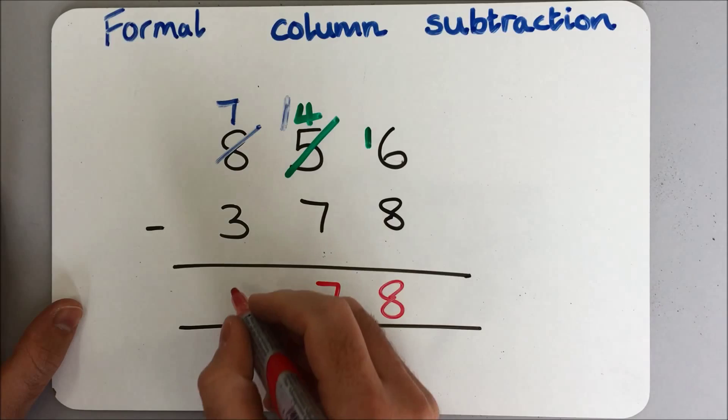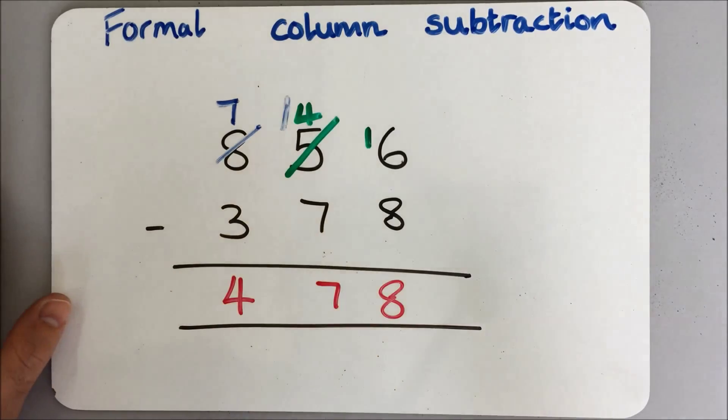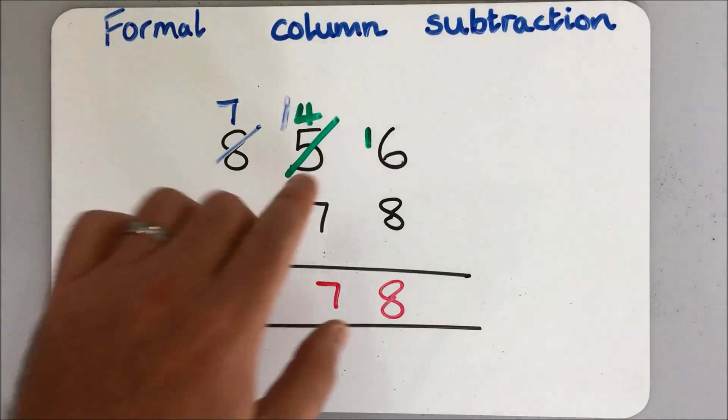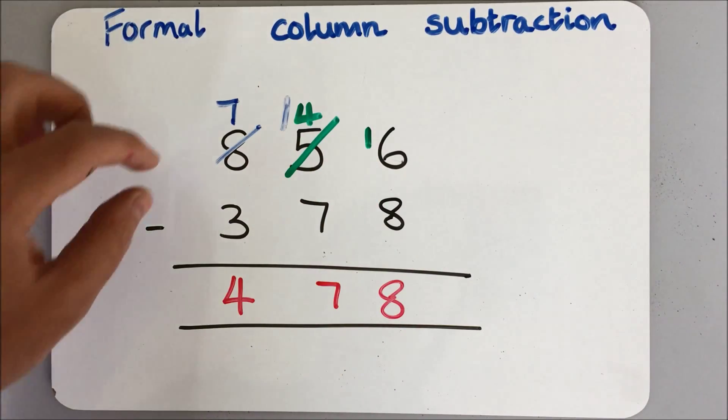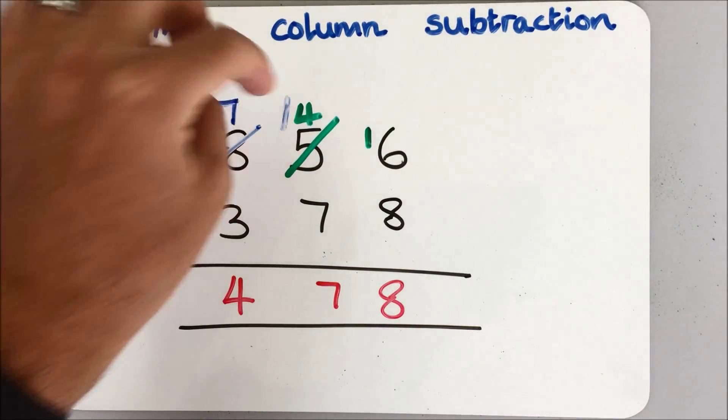And add it into the 10 column. So now I've got 14 tens. So 14 tens take away 7 tens leaves me with 7 tens.